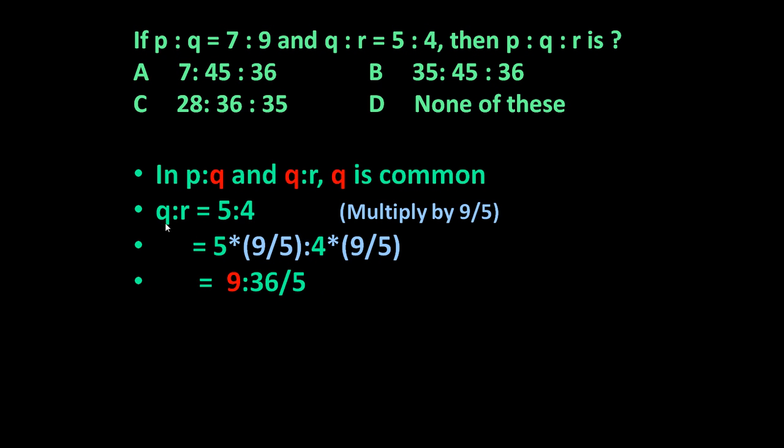So we got Q is to R is 9 is to 36 by 5. So Q means 9 here also. Now we can write P is to Q is to R. P is to Q is 7 is to 9 and Q is to R is 9 is to 36 upon 5.